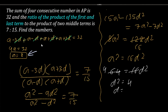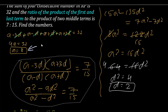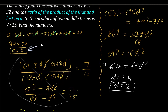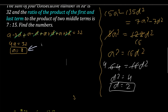Substituting a = 8, we get 64 = 16d², so d² = 4, meaning d = ±2. We consider only the positive value, so d = 2. Now we have a = 8 and d = 2, and we can find the four numbers.